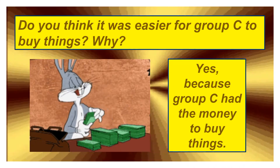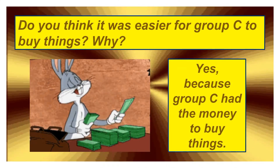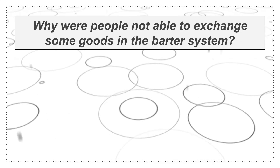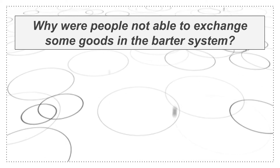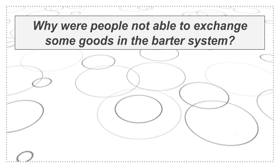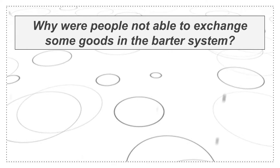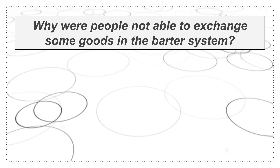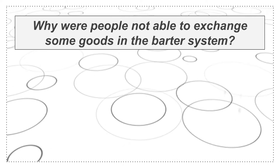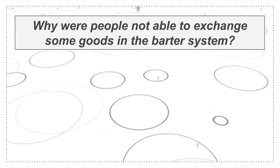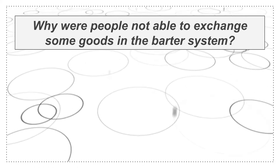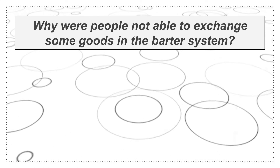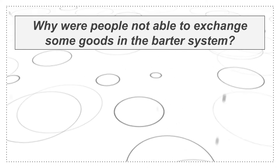Our activity is completed. Now a general discussion: why were people not able to exchange some goods in the barter system? In the previous chapter we studied about the barter system, and we know it is not easy — we cannot barter all things. We all use money in our daily lives to buy things we need. Have you ever wondered how and why people started using money? Let's start looking at the reasons.